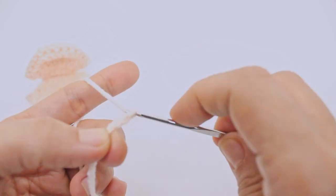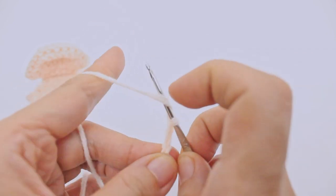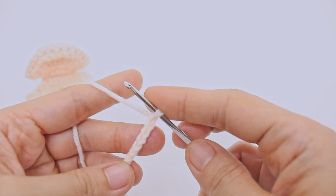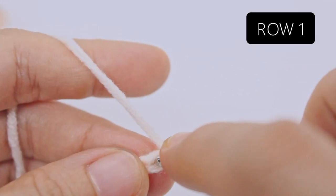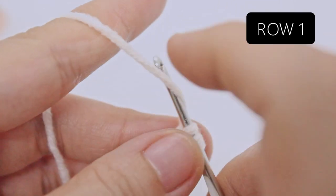Row one: single crochet in the second chain from the hook and in the next five chains.